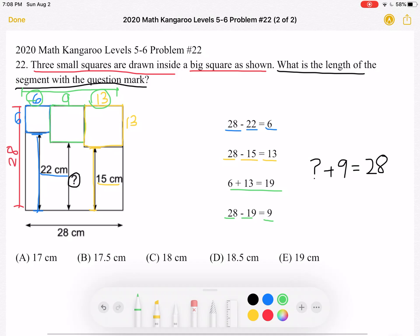And we know this is true because the entire side length is 28. And we know that from here to here is 9. So we can subtract 9 from both sides to get that the question mark is equal to 19 centimeters.